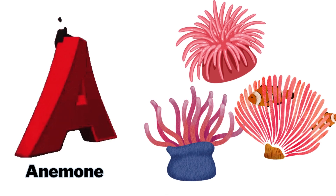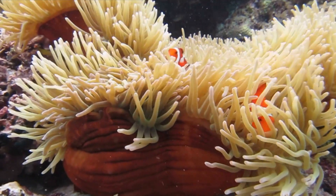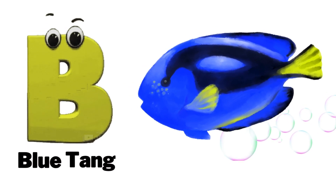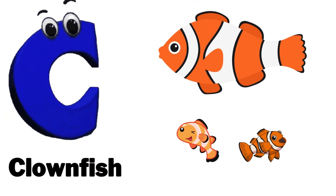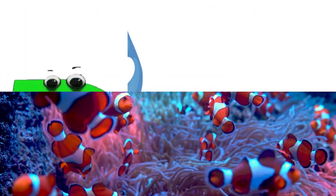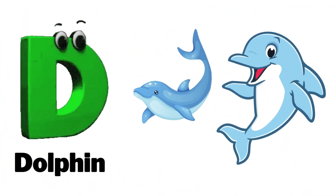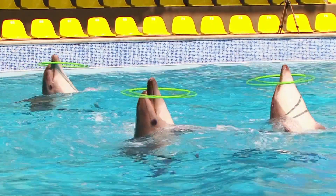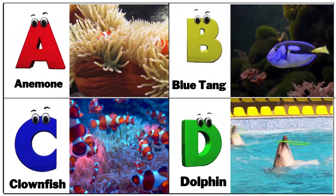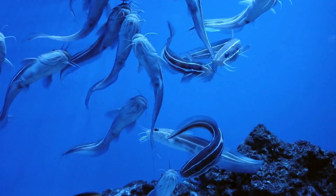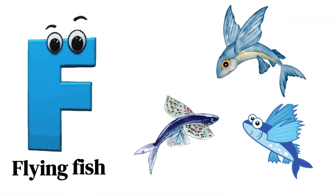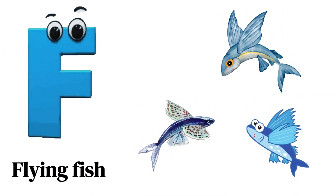A is for anemone. B is for blue tang. C is for clownfish. D is for dolphin. F is for flying fish. G is for goldfish.